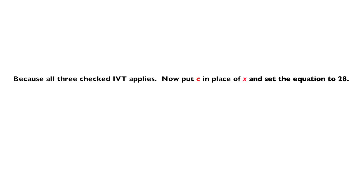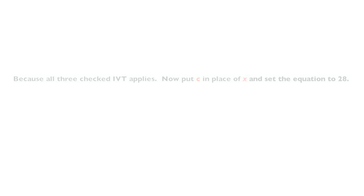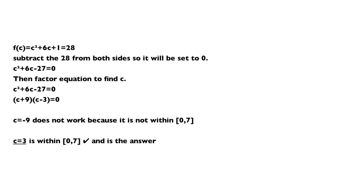Now put C in place of X and set the equation to 28. F of C is equal to C squared plus 6C plus 1, which is equal to 28. Subtract 28 from both sides so it is set to 0: C squared plus 6C minus 27 is equal to 0.